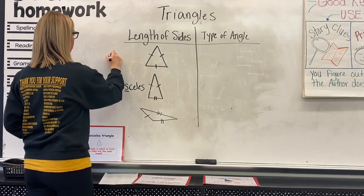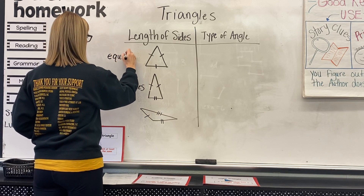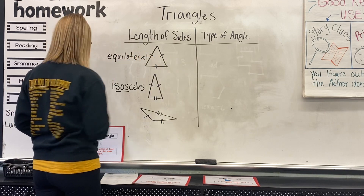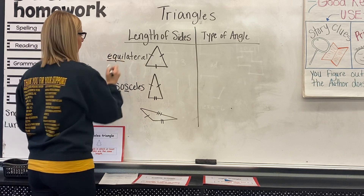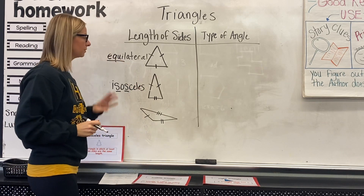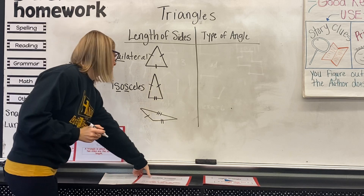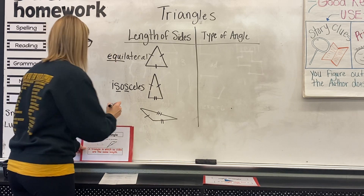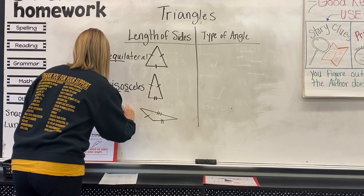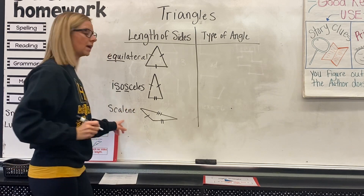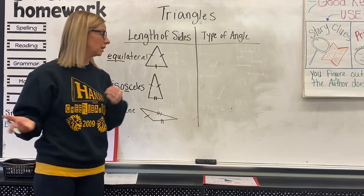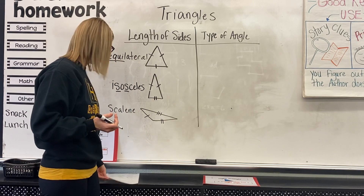Let me write these here. Equilateral — remember that means equal sides — equilateral: three congruent sides. Isosceles: two congruent sides. And scalene: zero, no congruent sides.